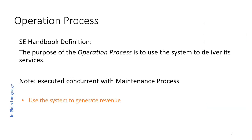The System Engineering Handbook defines the operations process as: the purpose of the operations process is to use the system to deliver its services. In plain language, that's to use the system to generate revenue. A key point is that the operations process runs in parallel — simultaneously — with the maintenance process; they run hand in hand.